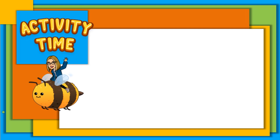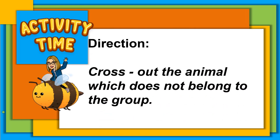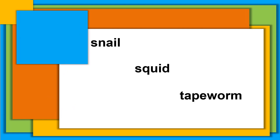It's activity time! Direction: cross out the animal which does not belong to the group. First group: snail, squid, tapeworm.